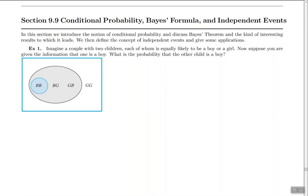Now suppose that you are given the information that one of the children is a boy. The question is what's the probability that the other child is a boy?